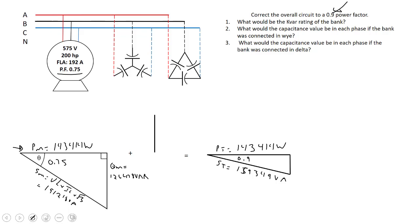Now the Q total, the lagging VARs still coming from the circuit, is going to use Pythagorean theorem. So S total squared minus P total squared and square root that. That works out to about 69,459 VAR.